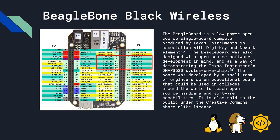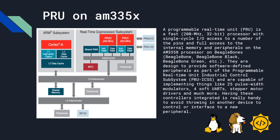A programmable real-time unit, also called a PRU, is a fast processor with single-cycle input-output access to a number of pins and full access to the internal memory and peripherals on the AM3358 processor on BeagleBones. They are designed to provide software-defined peripherals as part of the programmable real-time unit industrial control subsystem, also called PRU-ICSS, and are capable of implementing things like 25-channel pulse-width modulators, soft UARTs, stepper motor drivers, and much more. Having these controllers integrated is really handy to avoid adding another device to control or interface to a new peripheral.